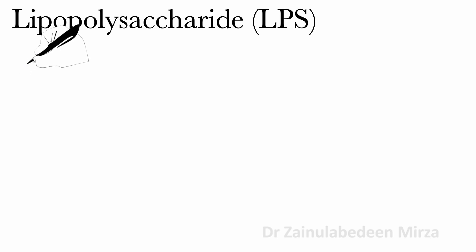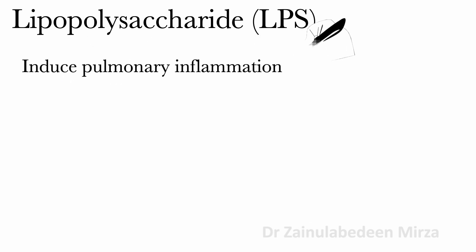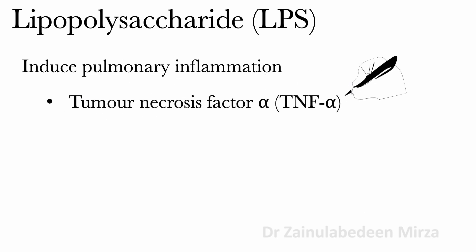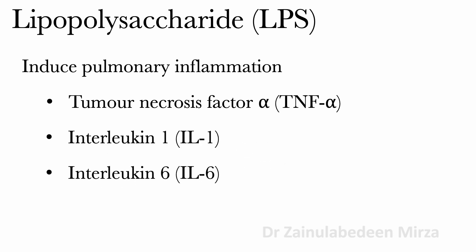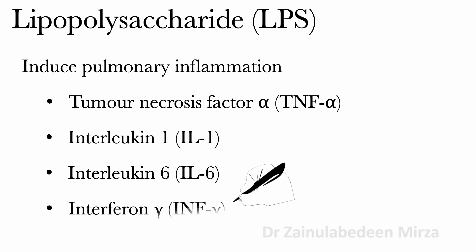LPS can also induce pulmonary inflammation, stimulating tumor necrosis factor alpha (TNF-alpha), interleukin-1, interleukin-6, and interferon-gamma. LPS contributes to antibiotic resistance and influences the formation of outer membrane vesicles (OMV) and biofilm.